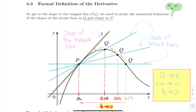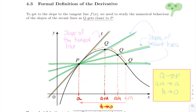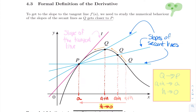For that, we already know that we need to study the numerical behavior of the slope of the secant line as the point q, the neighboring point, gets closer to p where we want to compute f prime at a. So if we connect p and q, we get those blue lines, and the slope of the blue lines are the slope of the secant lines. As q gets closer to p, these slopes are going to get closer and closer to the slope of the tangent line shown here in magenta.